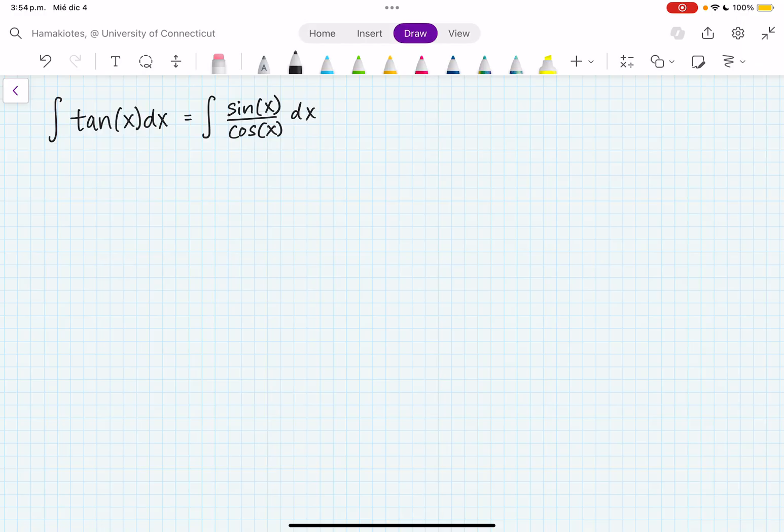So now we can actually do a u-substitution. So let's let u be cosine of x, so then du is equal to minus sine of x dx.